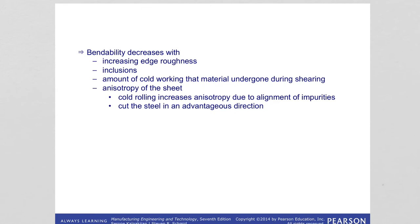What affects the bendability of the part? Bendability decreases with increasing edge roughness, because rough regions act as stress concentrators. Another factor is the amount, shape, and hardness of inclusions present in the shearing, and the amount of cold working that edges have undergone during shearing. Remember, first we do shearing to form the blank for bending, and during shearing you are also doing cold working and increasing the strength of the material, making it more brittle.